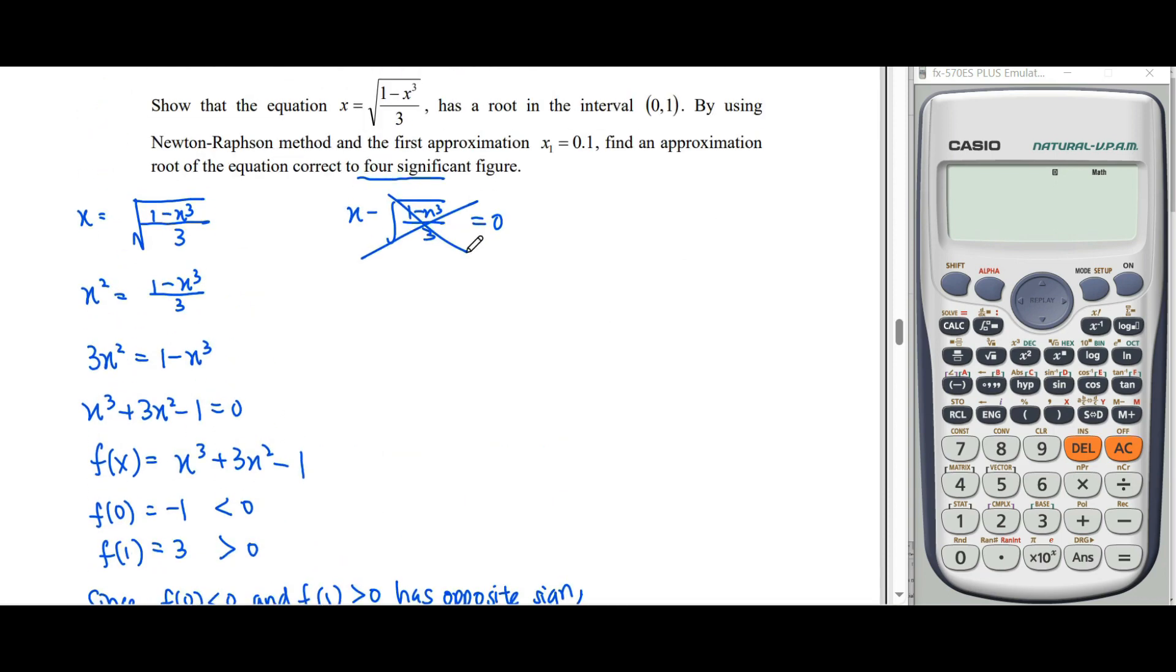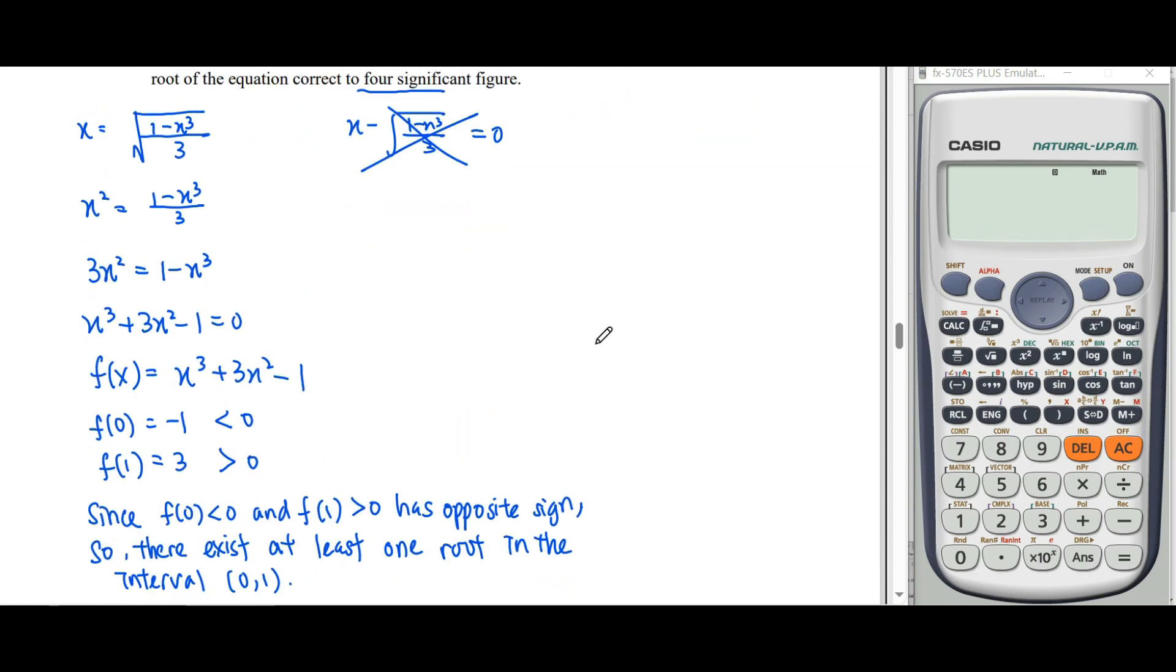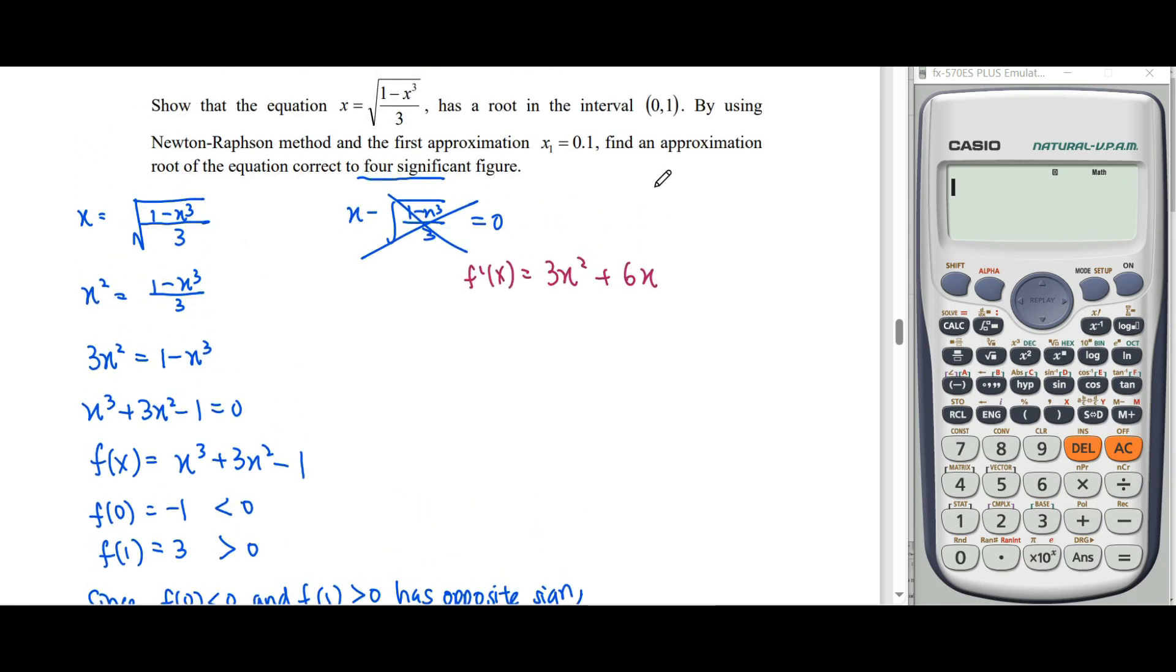For Newton-Raphson method, we need the differential function. Our differential function f'(x) = 3x² + 6x. The initial value given is x₁ = 0.1, then we start to approximate the rest of the x values showing our method.